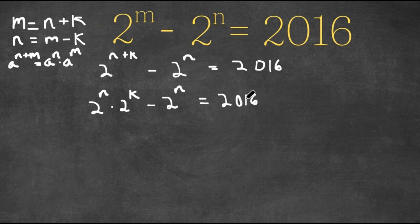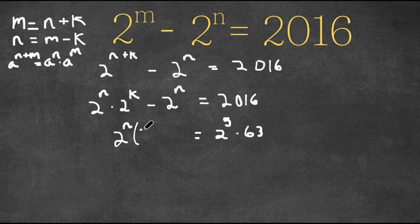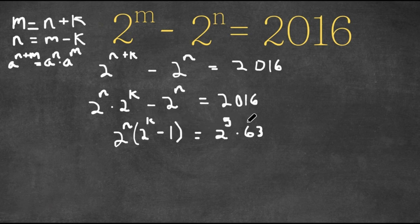Now I'm going to rewrite 2016 as 2 to the power of 5 times 63. Then I'm going to factor out 2 to the power of n. So if I factor out 2 to the power of n, I get 2 to the power of n times — since 2 to the power of k divided by 2 to the power of n is 2 to the power of k, and 2 to the power of n divided by 2 to the power of n is 1 — so minus 1. We get 2 to the power of n times (2 to the power of k minus 1), and this is still equal to 2 to the power of 5 times 63.